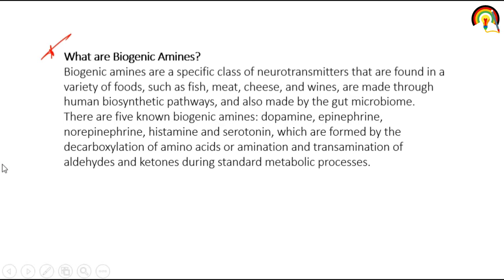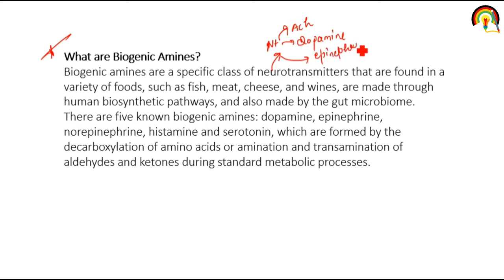Biogenic amines are a specific class of neurotransmitters — neurotransmitters released by neurons like acetylcholine, dopamine, epinephrine (also called adrenaline), and norepinephrine. Biogenic amines are found in a variety of foods such as fish, meat, cheese, and wine, and are made through human biosynthetic pathways and also by the gut microbiome.